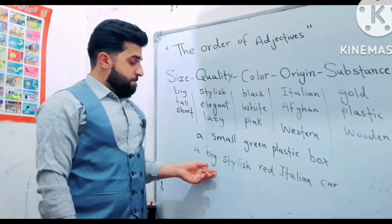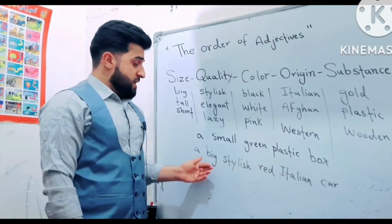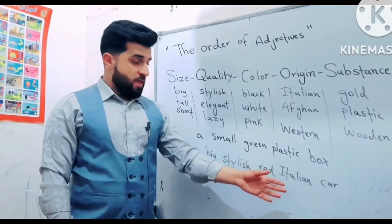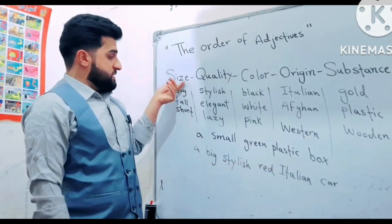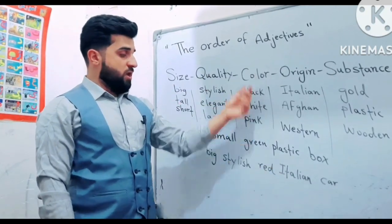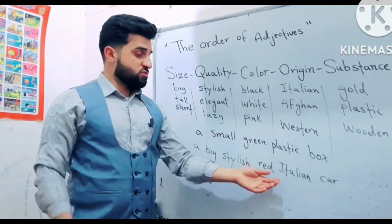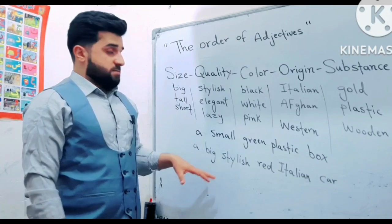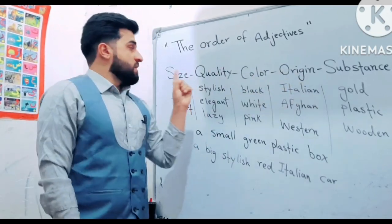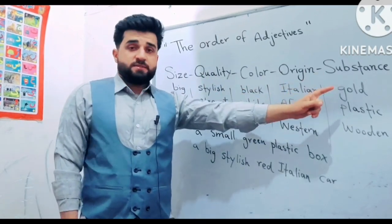For the next example: 'A Big Stylish Red Italian Car' — یک موتر بزرگ استایلی سرخ رنگ ایتالیایی. Here four adjectives are used: Big (Size), Stylish (Quality), Red (Color), Italian (Origin). The conclusion is that we must follow this order: Size, Quality, Color, Origin, Substance.